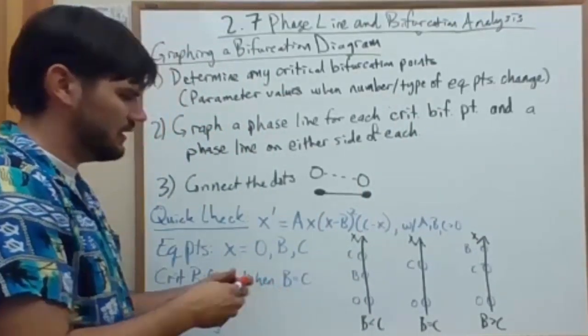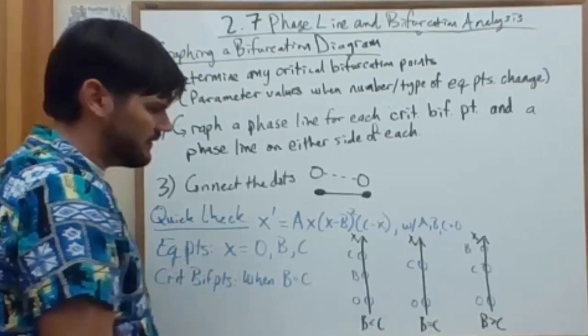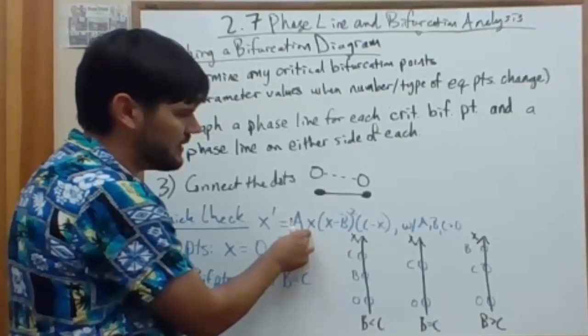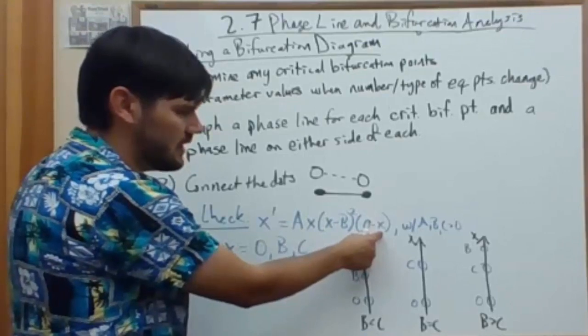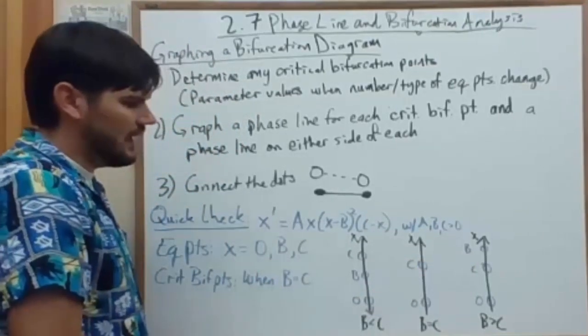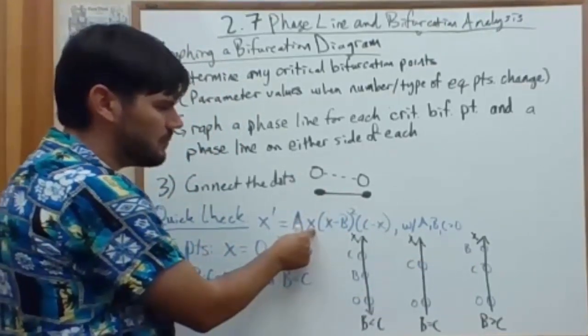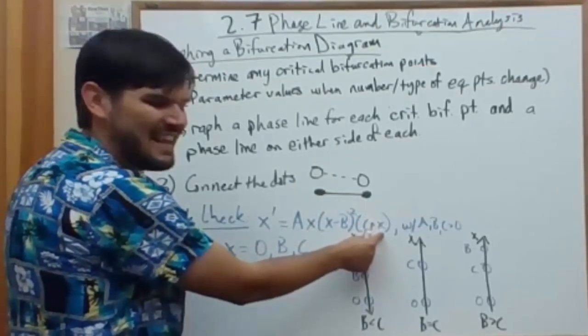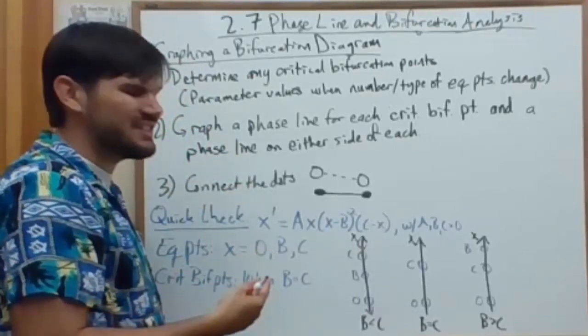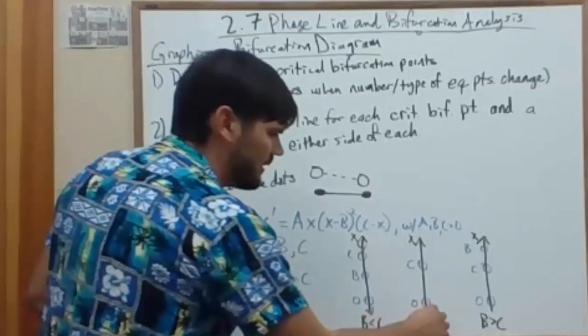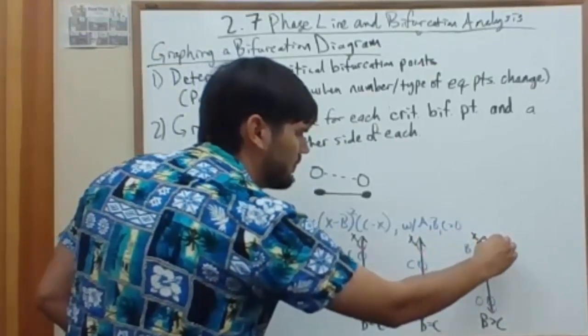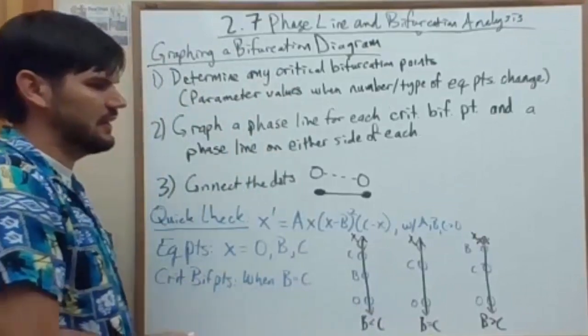So let's do a quick sign chart for these. Starting on the left, at the bottom, you can use negative infinity. You have a negative times a positive squared, times a positive. So that is a negative going down. And then at positive infinity, you have a positive times a positive squared times a negative. So it's going down as well. Now I do these two, the extreme points, first because they're the same across all the phase lines. It doesn't matter the values for b and c. We always have the same pattern at the extremes.